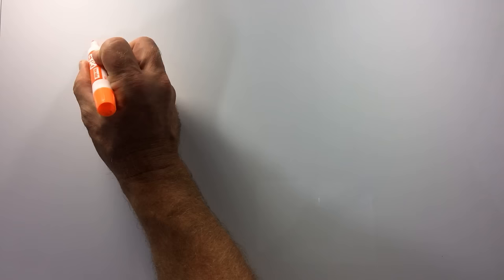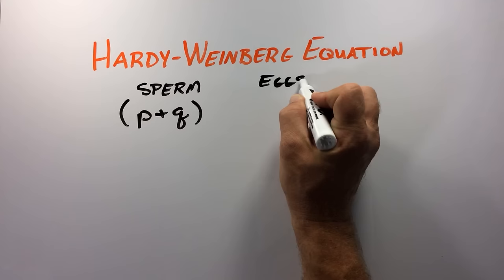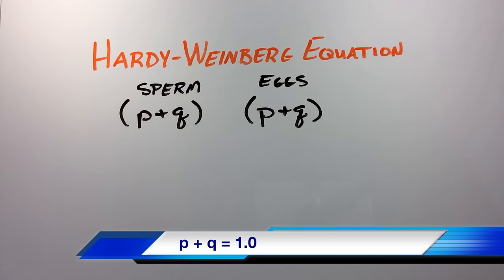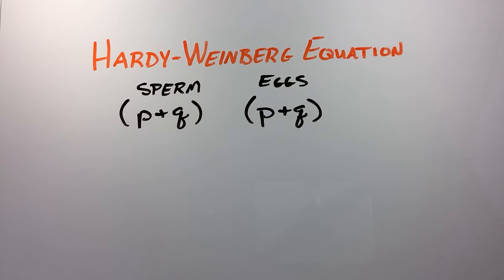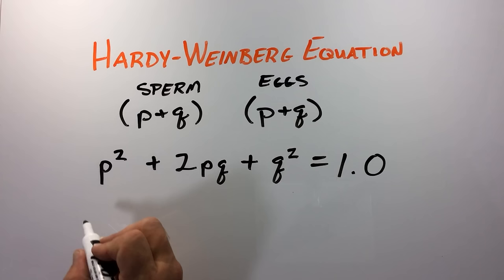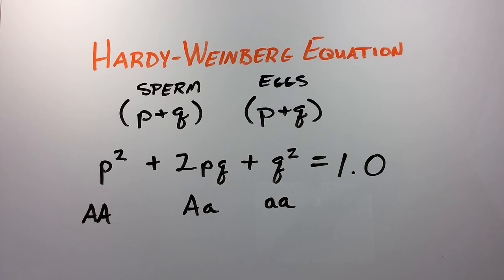And this is what brings us to the Hardy-Weinberg equation. In this equation, the frequency of our big A allele indicated by P and the little a allele indicated by Q allow us to predict the probability of these different alleles coming together in eggs and sperm during sexual reproduction. The probability of big A alleles coming together is indicated by P squared, the probability of heterozygotes is indicated by 2PQ, and the probability of homozygous recessive individuals is indicated by Q squared.